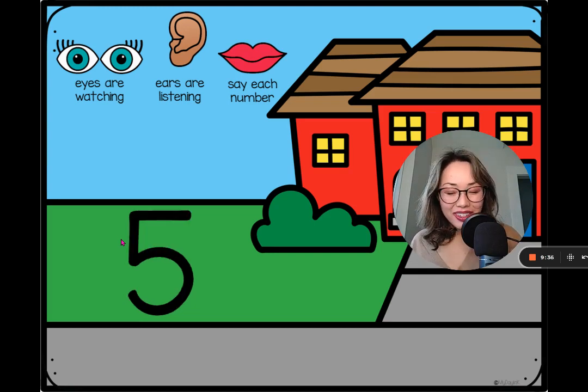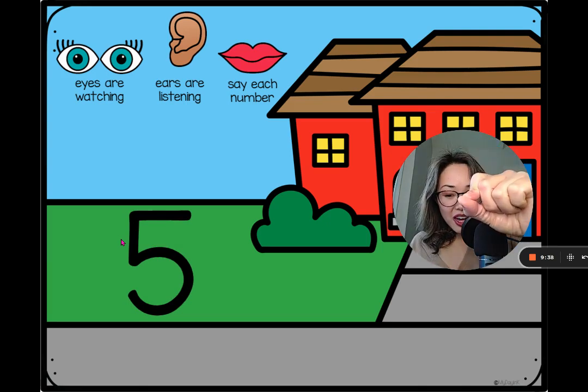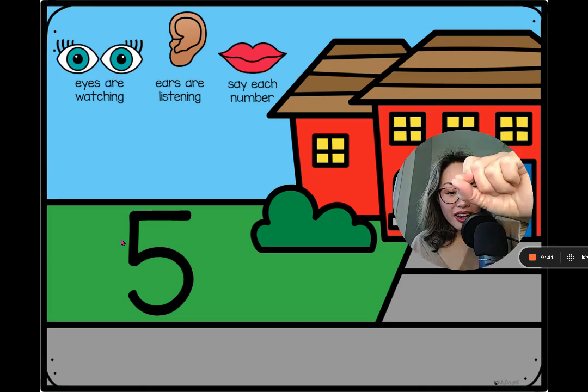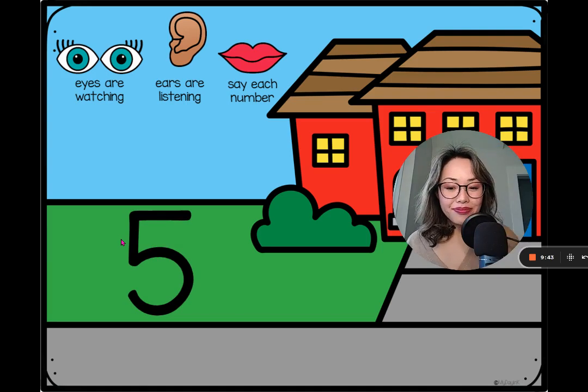And number five, last number. Pull straight down. Backwards C, line in the sky.